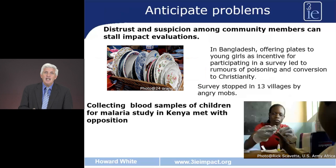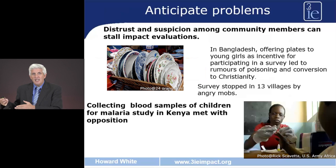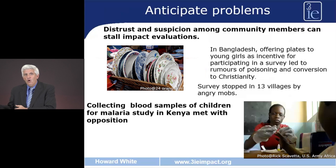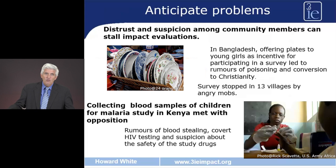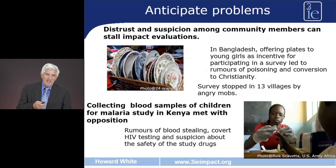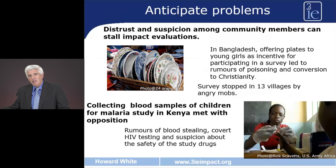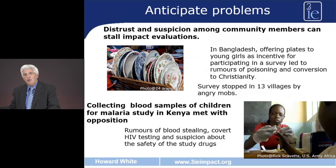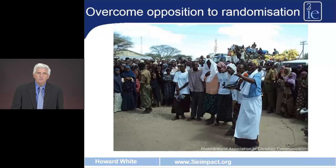Similarly, in Kenya, a study of a malaria intervention was taking blood samples, which raised suspicions about what the blood was being used for — rumours that the blood was being stolen, rumours of vampires (which are very common in many parts of Africa), rumours that this was covert HIV testing, and rumours that the drugs themselves were not safe. This undermined compliance with the intervention and undermined the ability to evaluate it, because the intervention was not being carried out in the way in which it had been intended.